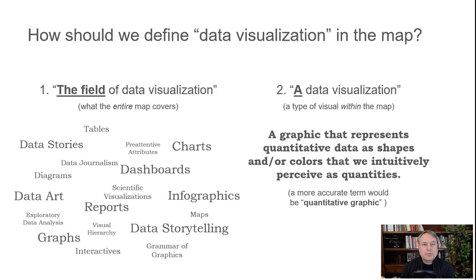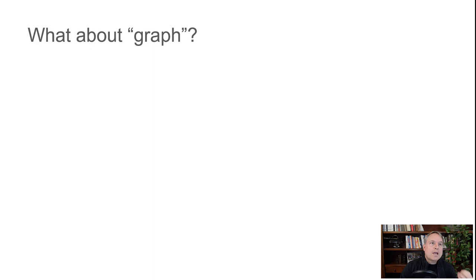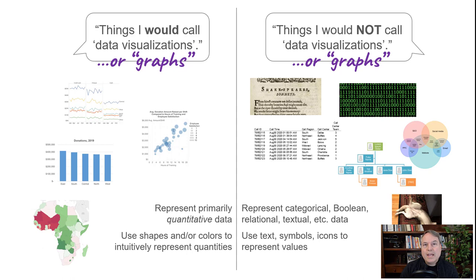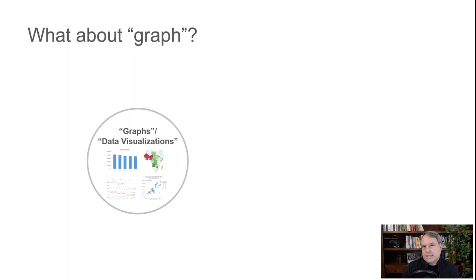So when it comes to how people use this term in everyday conversation, they use it to refer to a graphic that represents quantitative data as shapes and/or colors that we intuitively perceive as quantities. It's kind of an unfortunate term because if we take it literally, there's a big difference between its literal interpretation and how most of us use it in everyday conversation. A term like quantitative graphic would actually be a more accurate description. But I'll leave it as data visualization. As a general principle, I tend to favor definitions that hew as closely as possible to the way people use terms in everyday conversation. In everyday conversation, people tend to use graph as a synonym for these types of images — so really, graph is kind of a synonym for a data visualization.